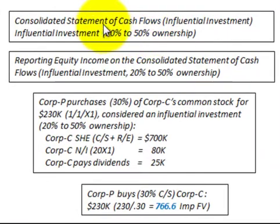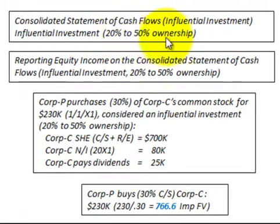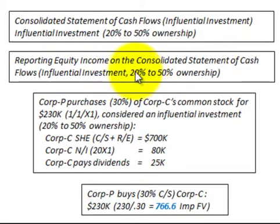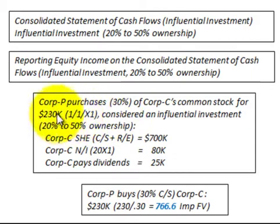Here we're going to be looking at a consolidated statement of cash flows for an influential investment. An influential investment is where one company goes out and buys 20 to 50 percent ownership in another company. We're going to be specifically looking at reporting this equity income on a consolidated statement of cash flows. In this example, corporation P purchases 30 percent of corporation C's common stock for $230,000 on date 1/1/X1, which is considered an influential investment.